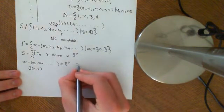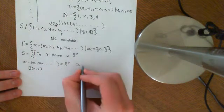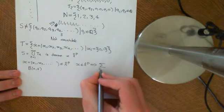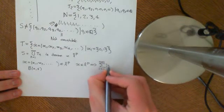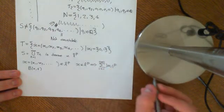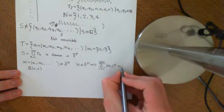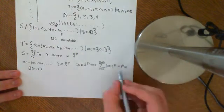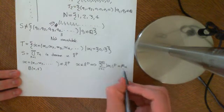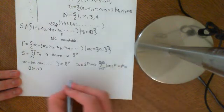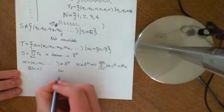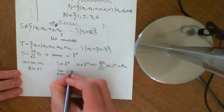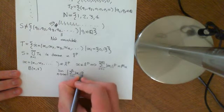Because X is an element of LP, it implies that the sum from i equals 1 to infinity of the modulus of Xi to the power of P is some finite value. Let's call that finite value MX — this is just the finite value which this series is converging to. The meaning of saying that this converges to MX is that the limit as N approaches infinity of the partial sums, sum from i equals 1 to N of |Xi|^P, equals MX.